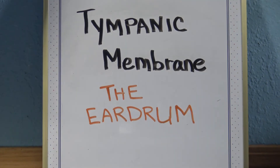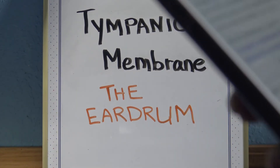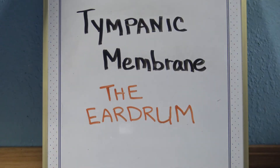Tympanic membrane — the tympanic membrane is the eardrum. It separates the outer ear from the middle ear.